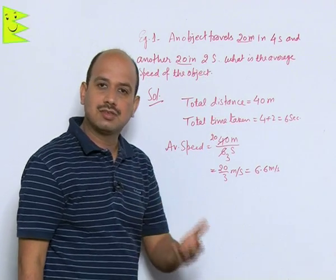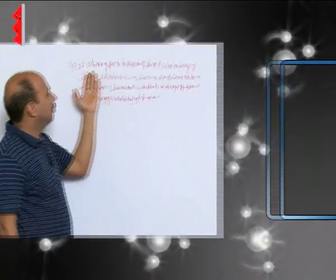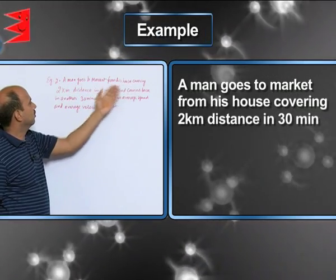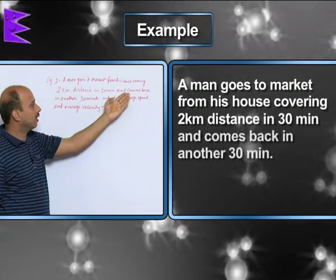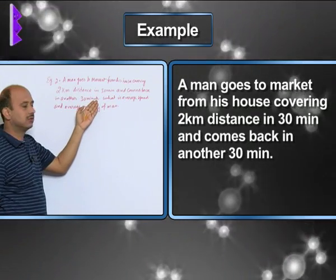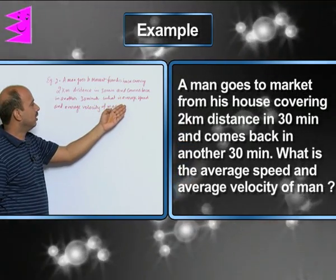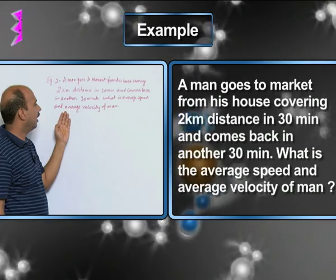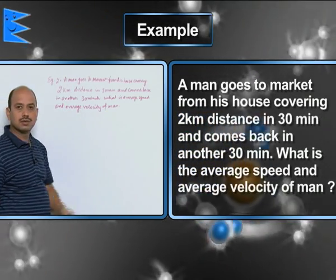See the next example: a man goes to market from his house covering 2 kilometers in 30 minutes and comes back in another 30 minutes. What is the average speed and average velocity of the man?